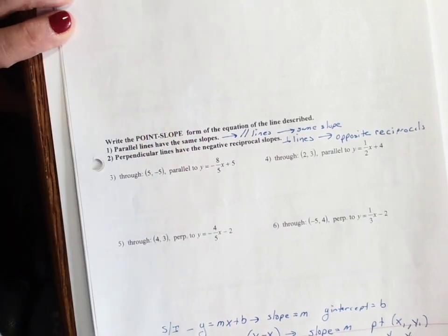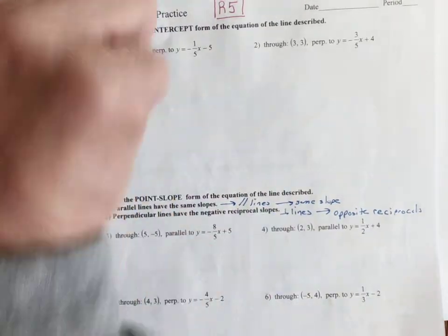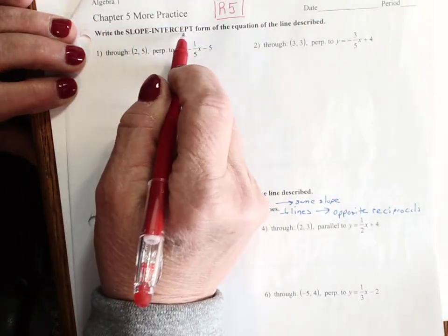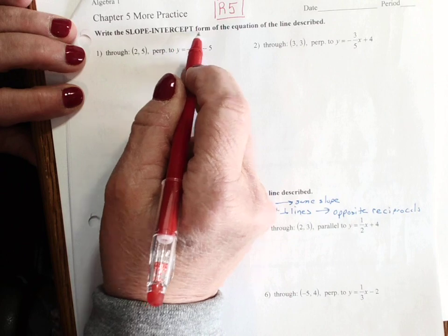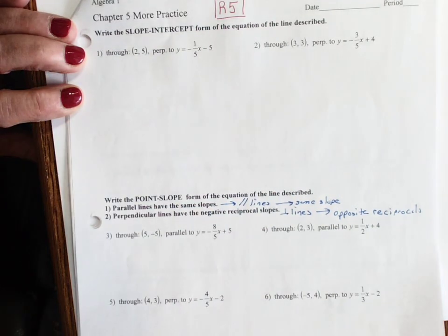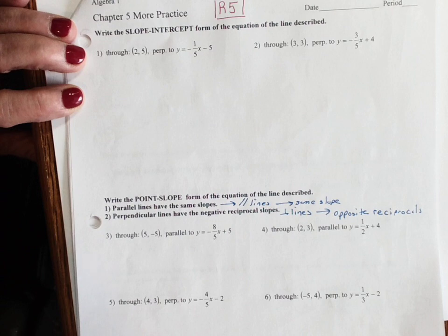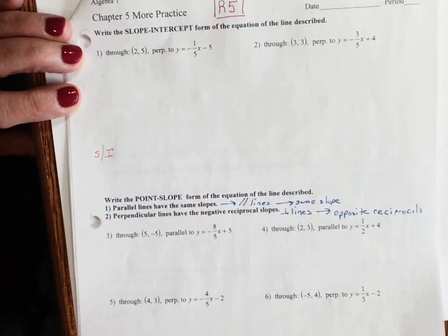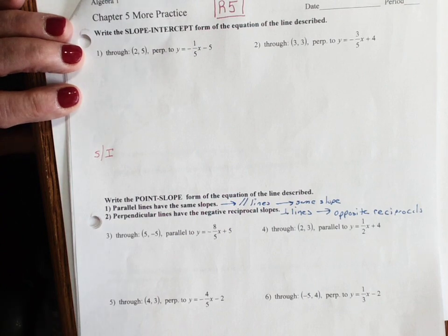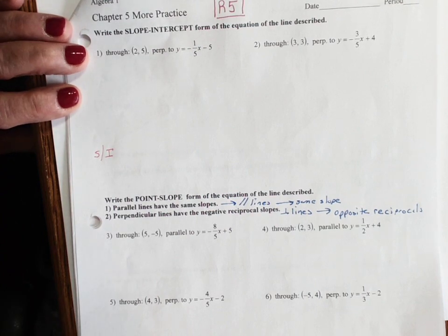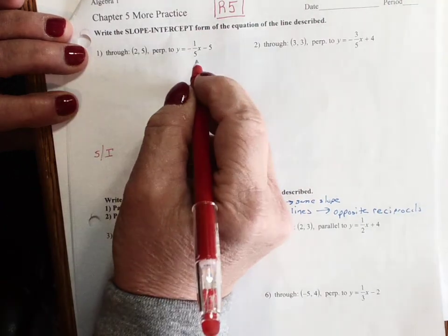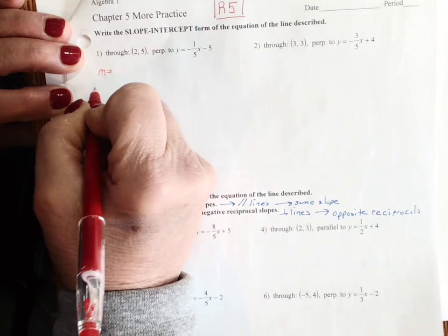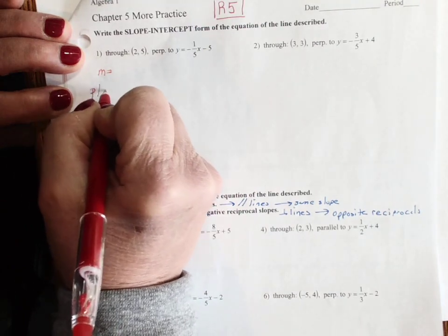Make sure that you read the instructions carefully. So it says write the slope intercept form of the equation of the line that is described. So our goal is to come up with the slope intercept, which looking at your bottom of the paper it's y equals mx plus b. Well to get there we need to know what the slope is and we need to put it into point slope.